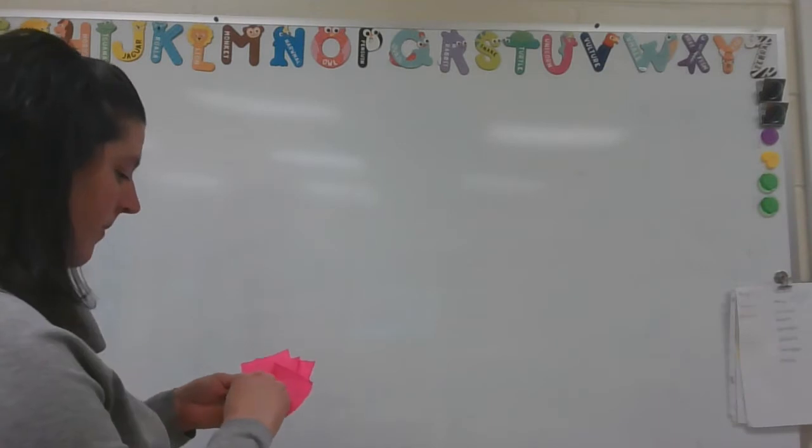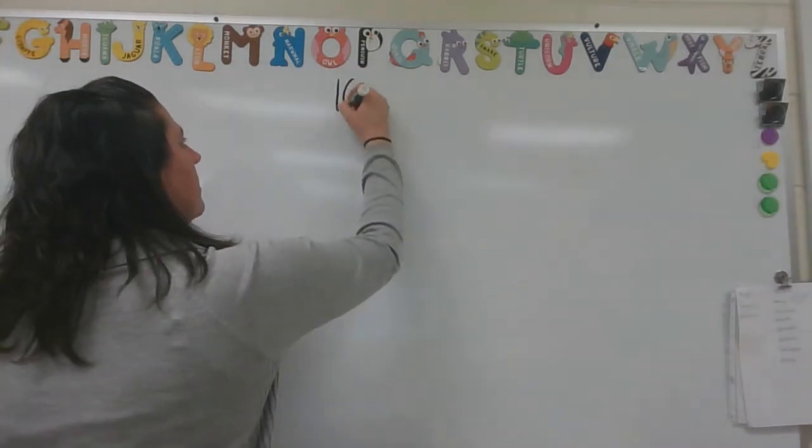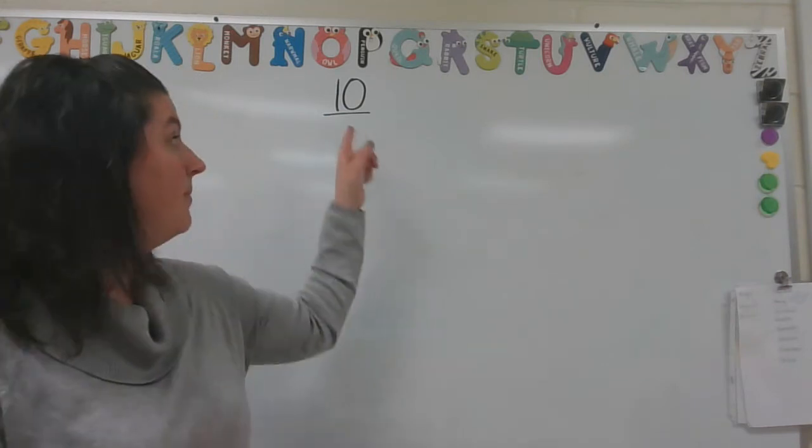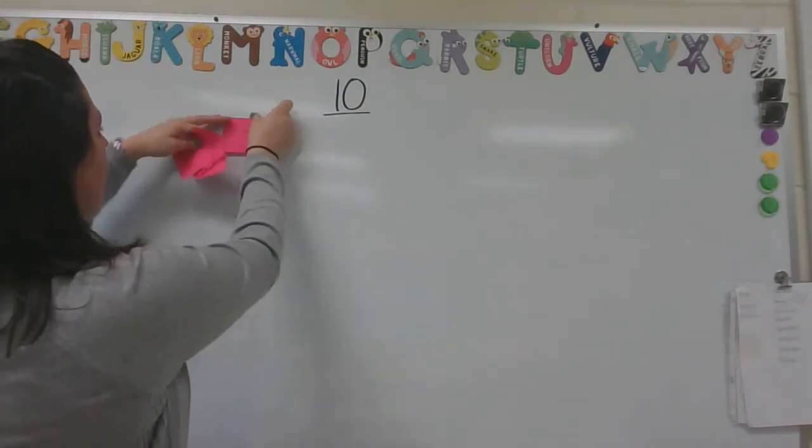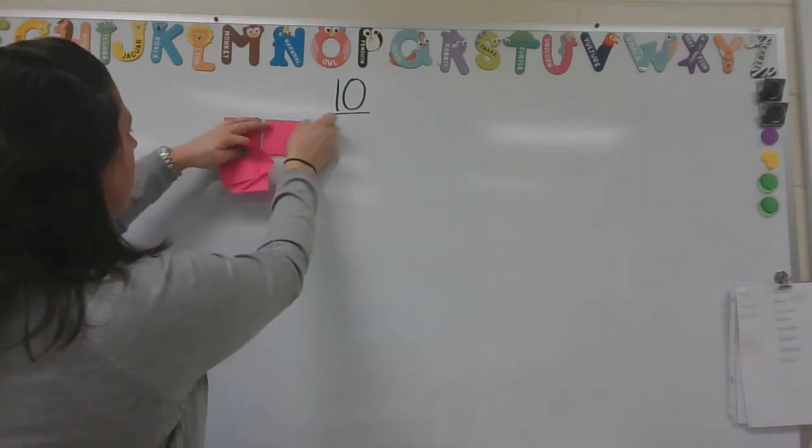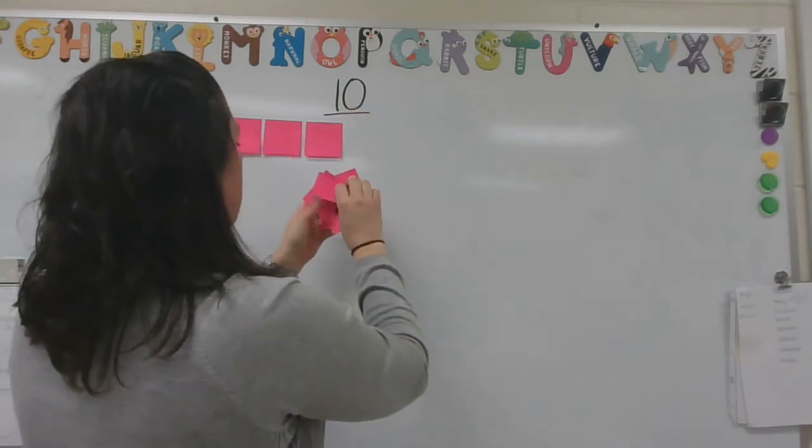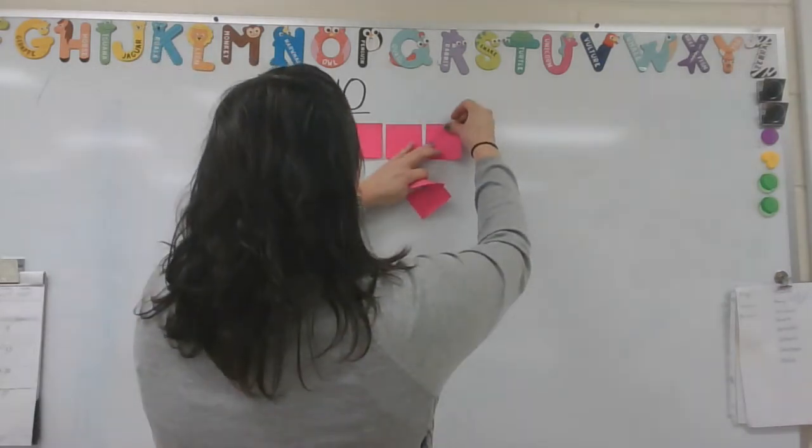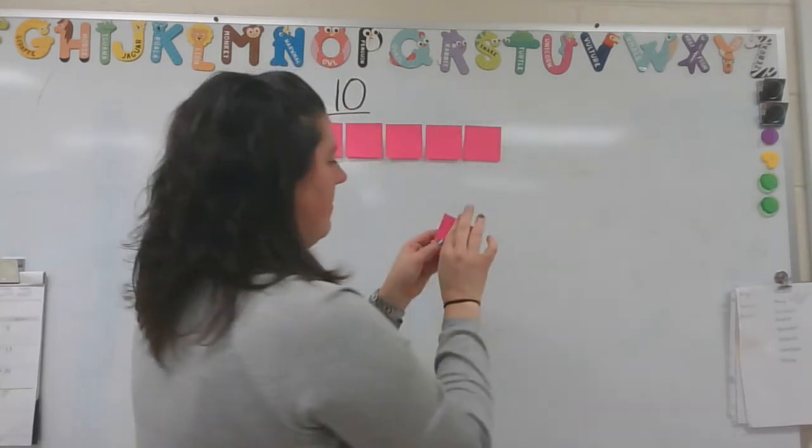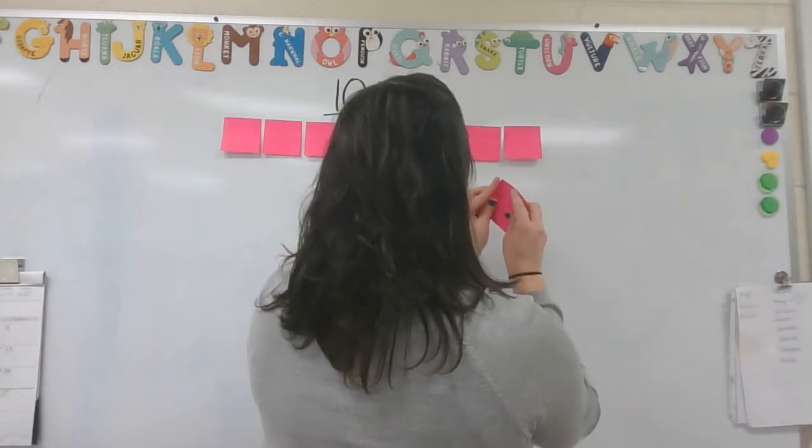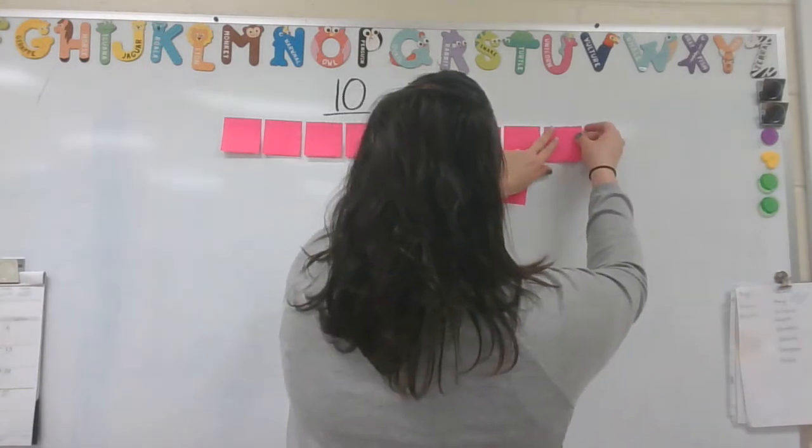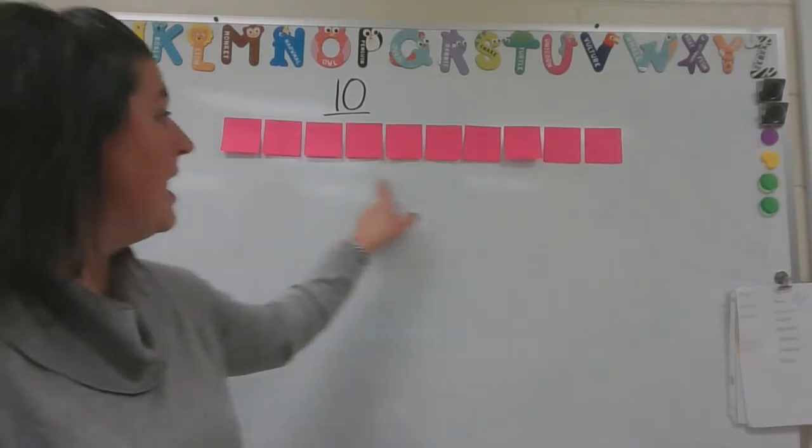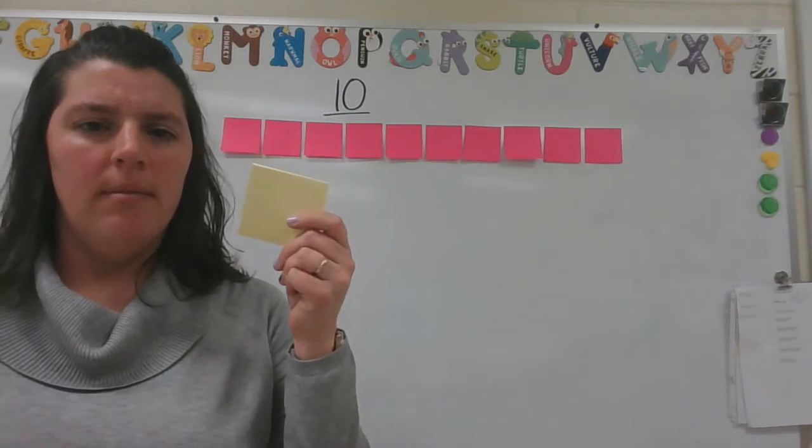Well, one combination that people said - and I'm going to write that number up here so we can remember we're talking about the number 10. Because there always has to be how many sticky notes? 10. So some people said there could be 1, 2, 3, 4, 5, 6, 7, 8, 9, 10 pink. What do you notice about my 10 sticky notes? They are all pink. There might be 10 pink sticky notes. So how many yellow were there? Zero. That's right.